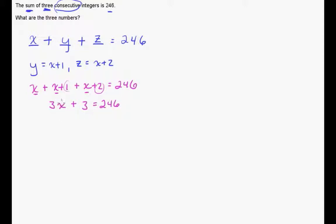Now we have some numbers in here and we can use some algebra and solve this for x. So 3x plus 3, we're going to subtract 3 from both sides. And that's going to leave us with 3x equals 243. We'll divide by 3 now to get x by itself. Those 3's just cancel. And 243 divided by 3 is 81.